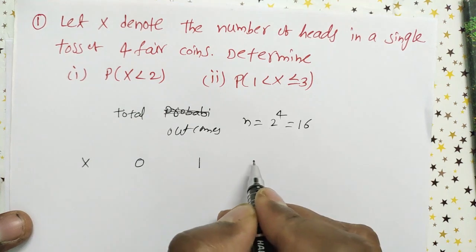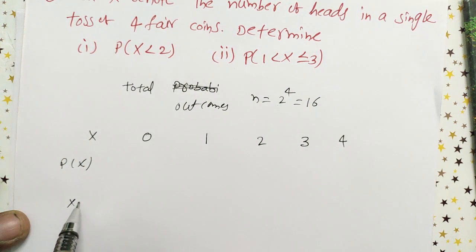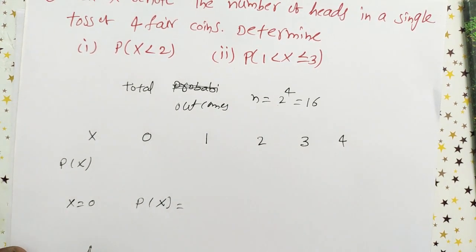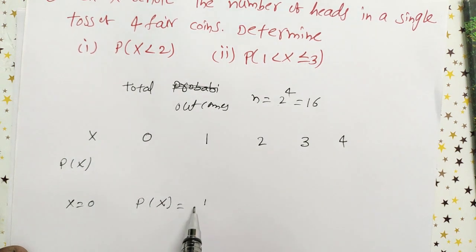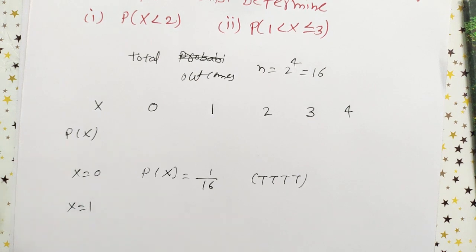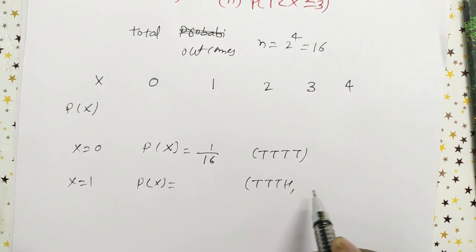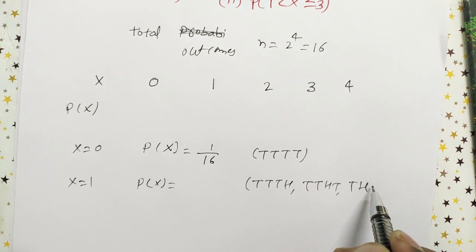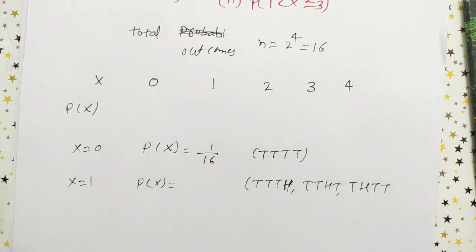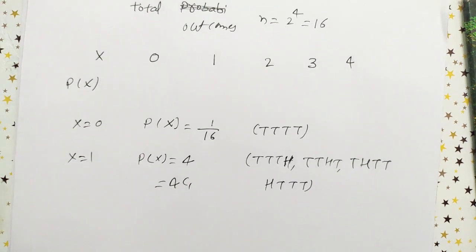The number of heads can be 0, 1, 2, 3, or 4. When X equals 0 — no heads — there is only one outcome: tail tail tail tail. So P(X=0) = 1/16. When X equals 1, one head and three tails appear. The outcomes are listed, and using 4C1 = 4, so P(X=1) = 4/16.